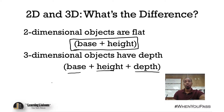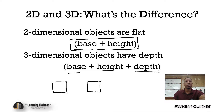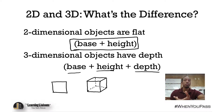For example, this could be a two-dimensional object — that's a square. And something along the lines of this would be a three-dimensional object. That would be a three-dimensional object because it has depth.